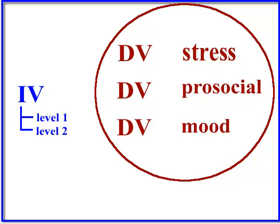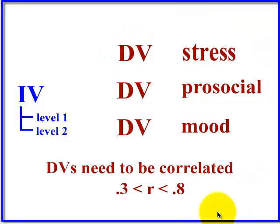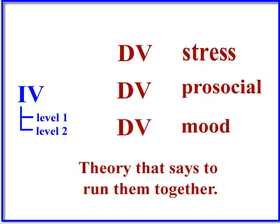Quick word of warning: your DVs have to be correlated between 0.3 and 0.8. That's what all the textbooks say. Or your DVs should be theoretically related somehow. Somebody somewhere should say you should run these three DVs as a group. So hopefully your DVs are like that. But again, check the correlation.